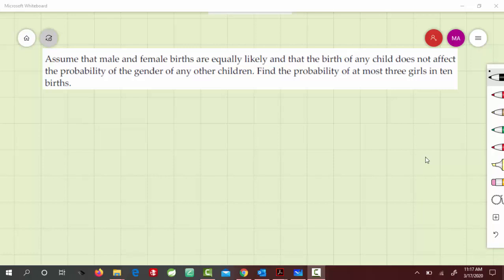Here is an example of binomial probability distribution. Assume that male and female births are equally likely and that the birth of any child does not affect the probability of the gender of any other children. Find the probability of at most three girls in 10 births.